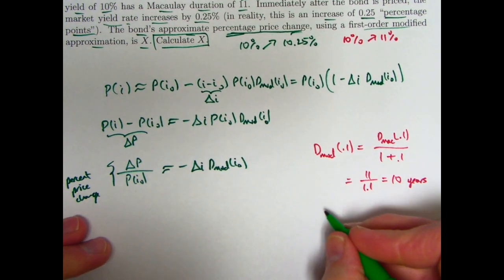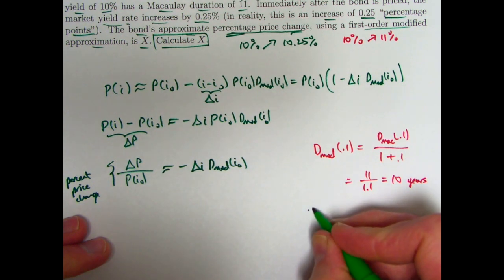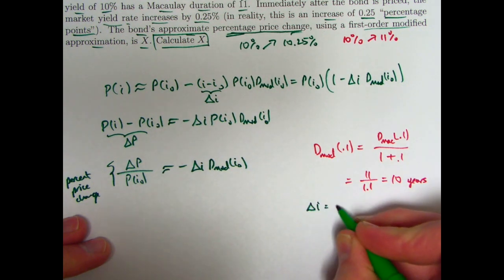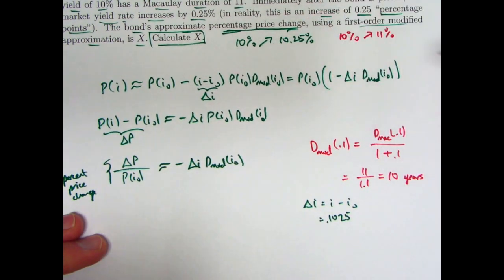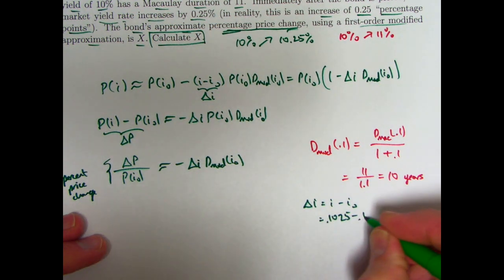And again, delta i is going to be i minus i₀ is going to be 0.1025, just like I said. It's going to increase from 10% to 10.25%. As a decimal, that would be 0.1025 minus 0.1. Delta i is 0.0025.